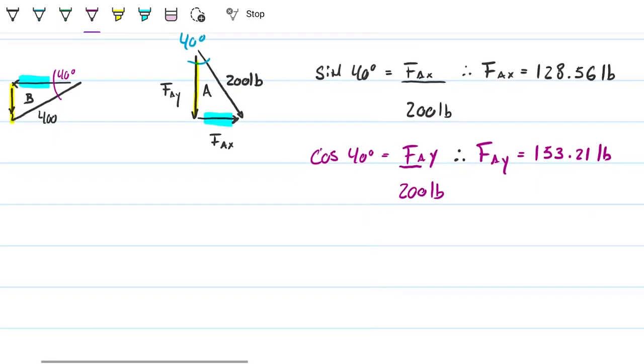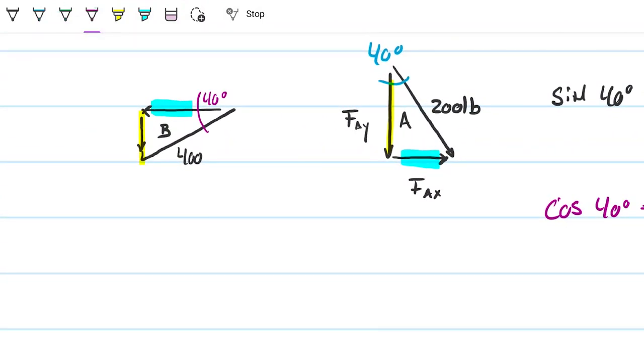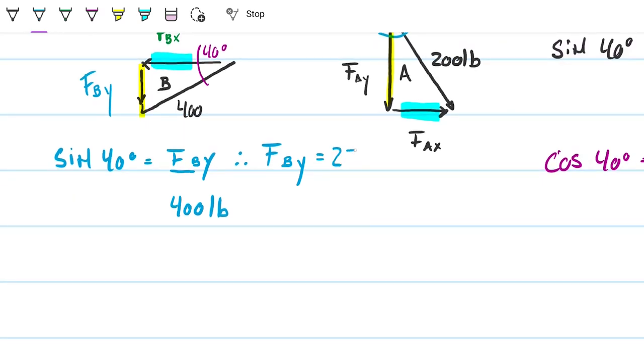Okay, so now I have the two decompositions of the forces there. I want to do exactly the same thing over here. I'm going to have force of bx over here, and I'm going to have force of by over here. And here I have the sine of 40, which is going to be the by over hypotenuse, which is my 400. So sine of 40 degrees is equal to f by divided by 400 pounds, which means that force b on the y direction is 257.12 pounds. Let me go ahead and put it down here.